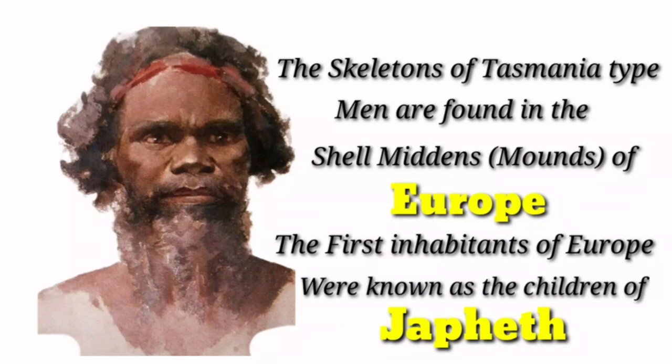The skeletons of Tasmania-type men are found in the shell middens or mounds of Europe. The first inhabitants of Europe were known biblically as the children of Japheth.